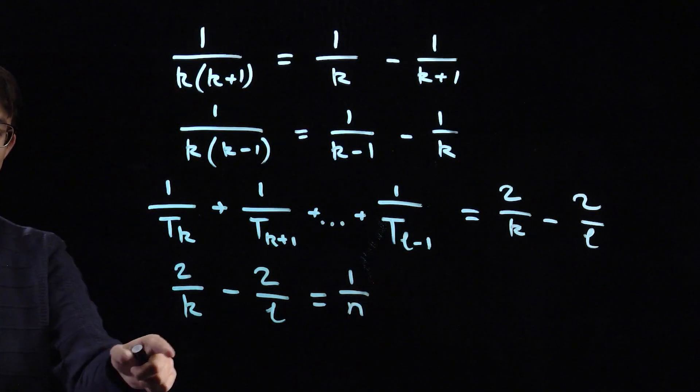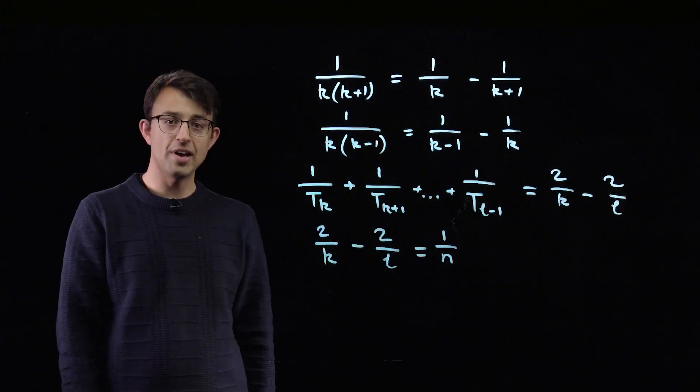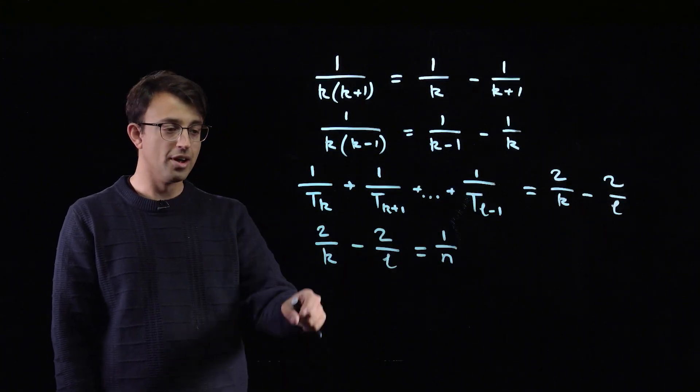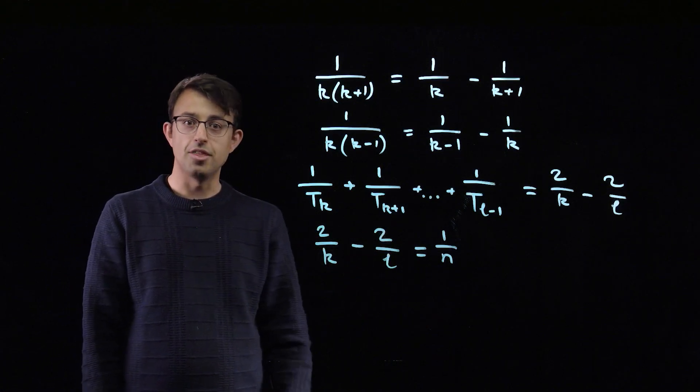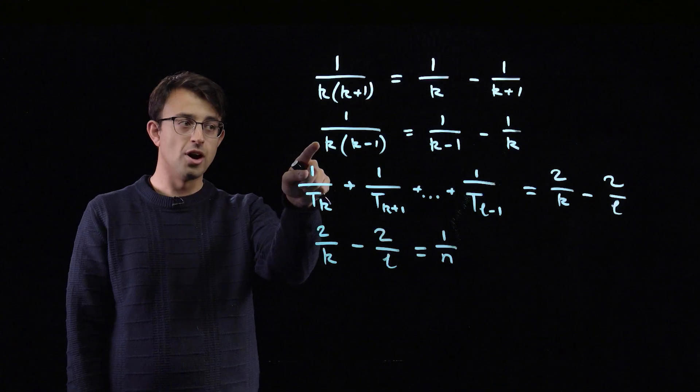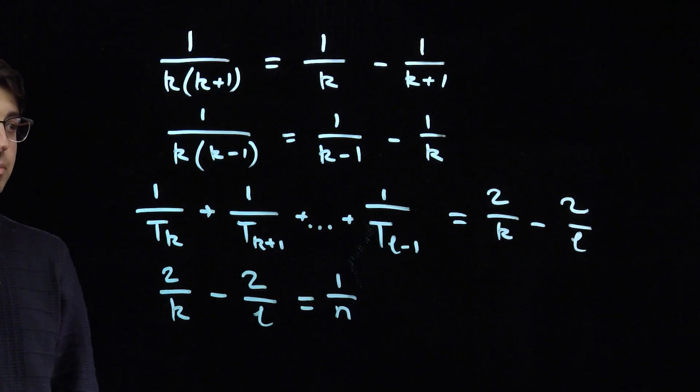What we'd like to do is to choose k and l suitably in terms of n to end up with a formula that says that 2 over k minus 2 over l equals 1 over n. And this is the moment to use our second difference formula that we established at the beginning.